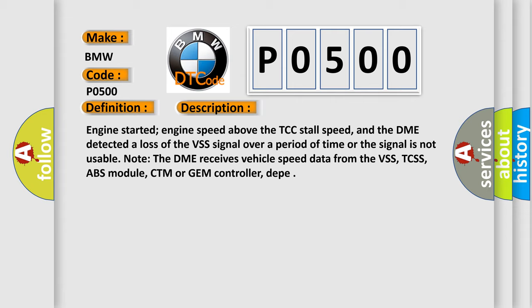Engine started, engine speed above the TCC stall speed, and the DME detected a loss of the VSS signal over a period of time or the signal is not usable. Note the DME receives vehicle speed data from the VSS, TCCSS, ABS module, CTM or GEM controller.